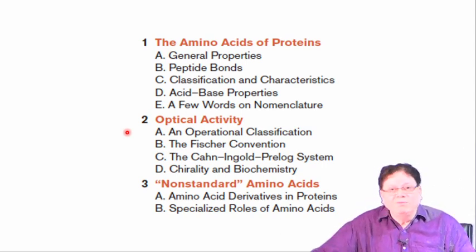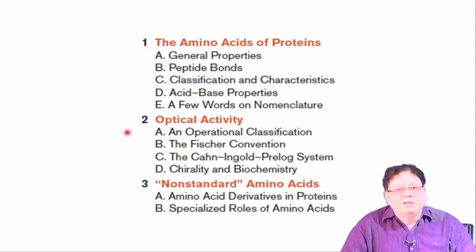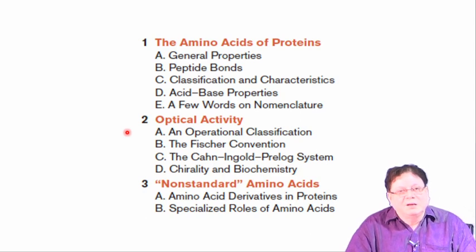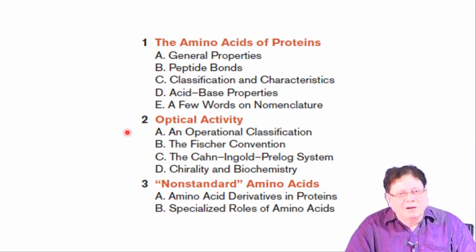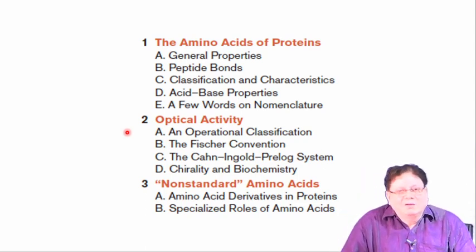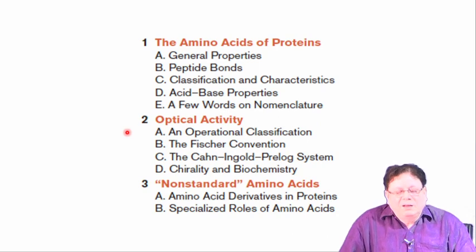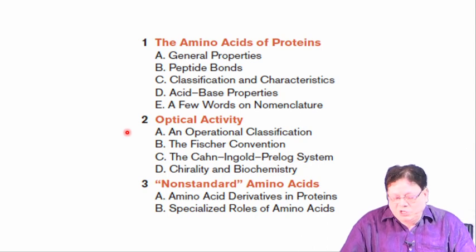Remember that the alpha carbon is the chirality center. However, there are a few other amino acids with an additional chiral center. I can remember at least one right now, and that is threonine, which has an additional chiral center. But mostly there is only one chiral center, present at the alpha position.